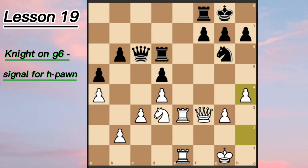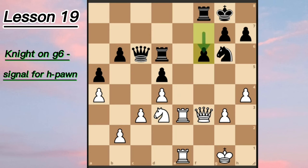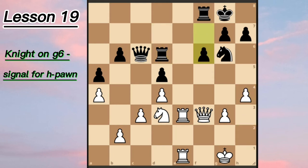Instead of taking, Black played rook to d6. White goes with the plan h4, Black plays f6. The idea is clear — they don't want the knight to go to f6. But if your opponent makes pawn moves, it means they create weak squares. By moving this pawn, Black is creating a weak square on e6.